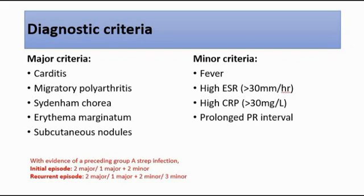So how do we diagnose acute rheumatic fever with these major and minor criteria? With evidence of a preceding group A strep infection, if this is the first time — the initial episode — we need two major criteria to diagnose, or one major plus two minor criteria to diagnose.